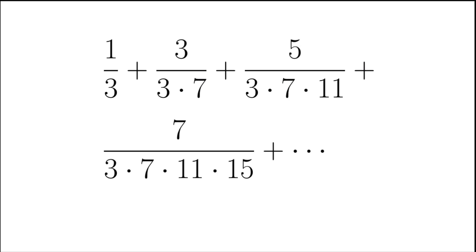All terms in the series are fractions. We start from 1 third, and then for the nth term, the numerator is the nth odd number, and the denominator is the product of the first n positive integers that are of the form 4k plus 3, which means the numbers that are 1 less than a multiple of 4.